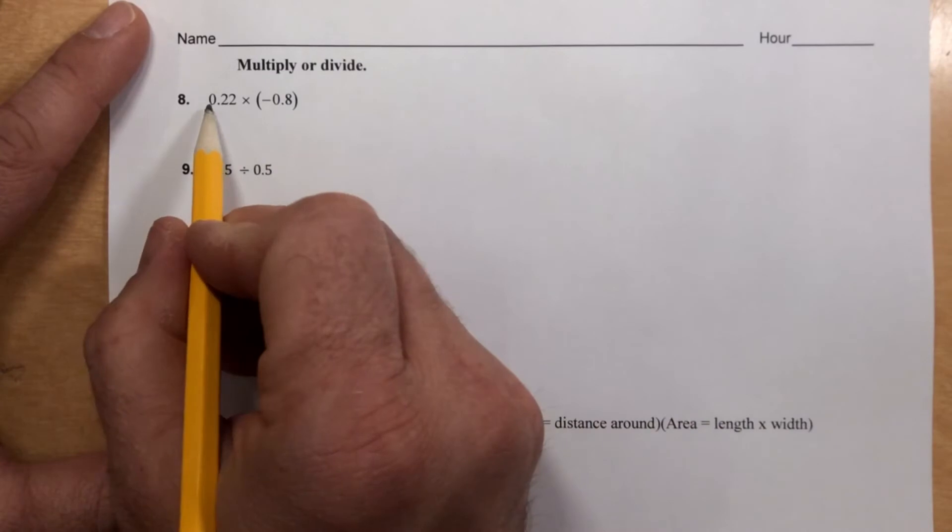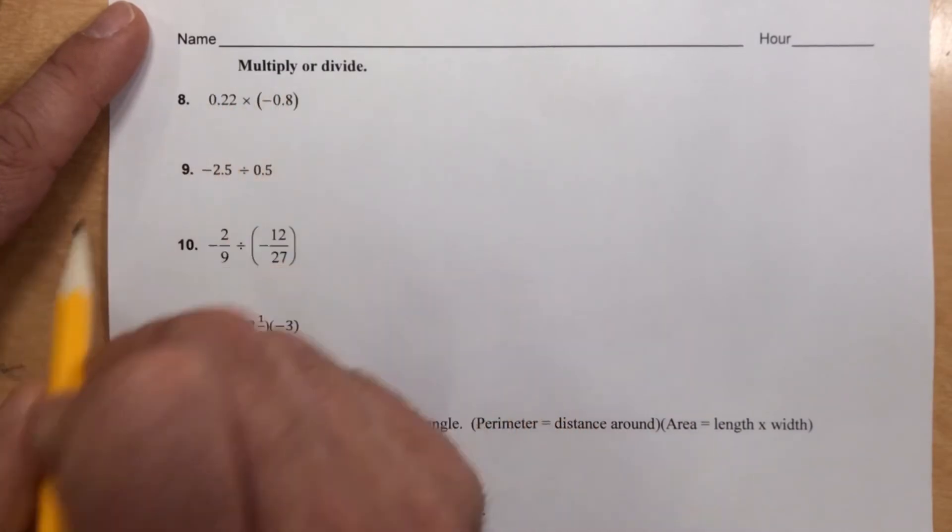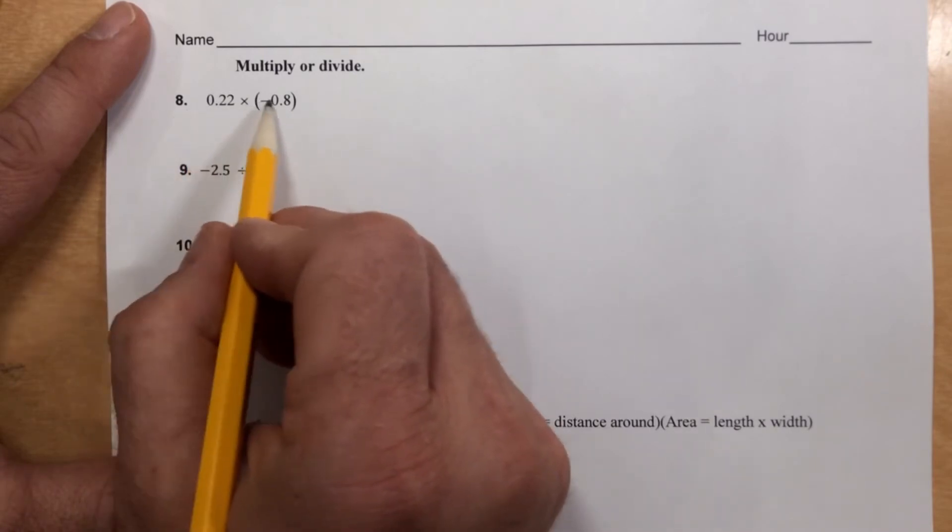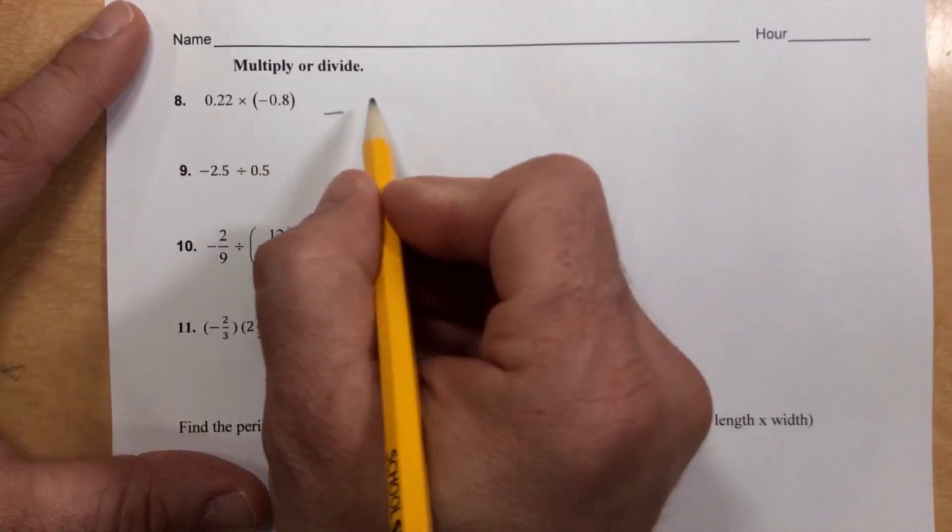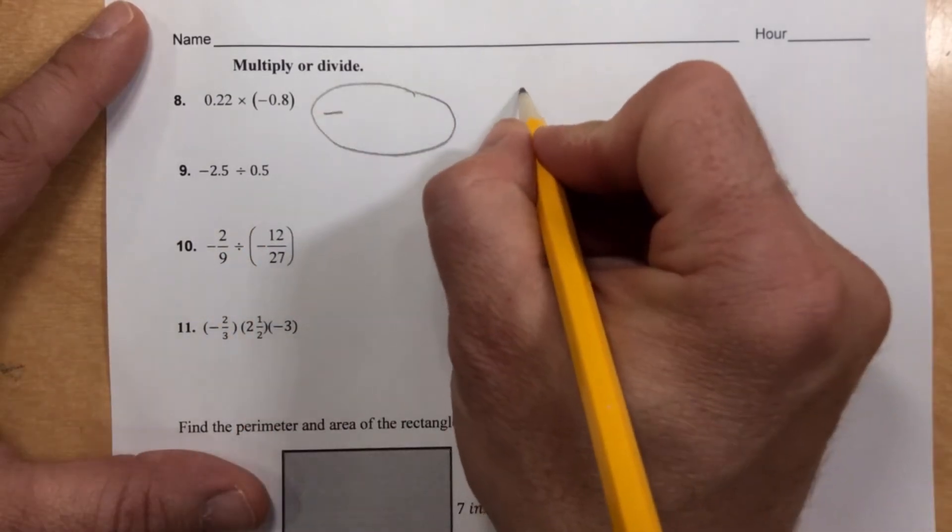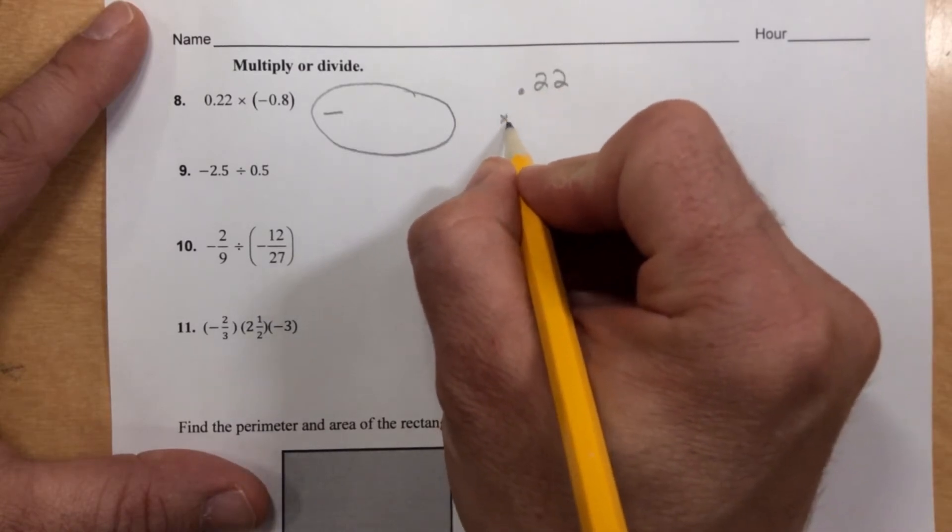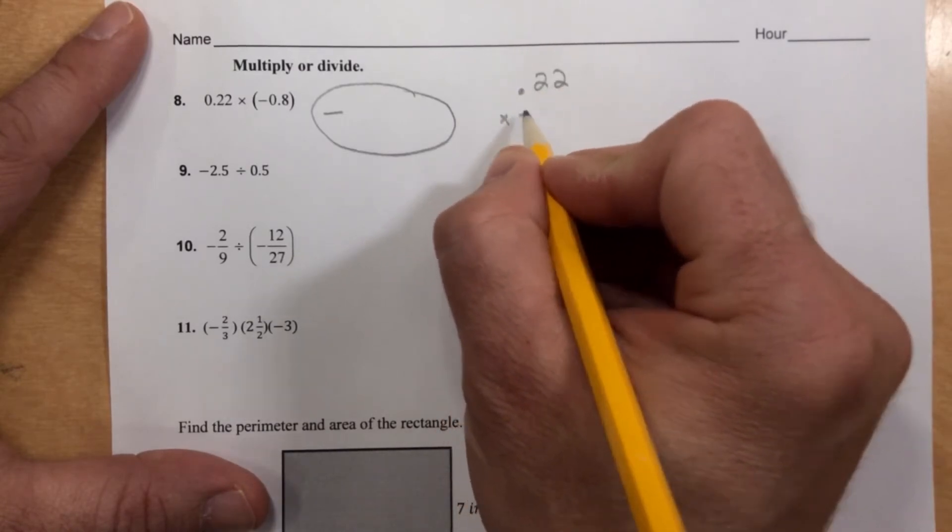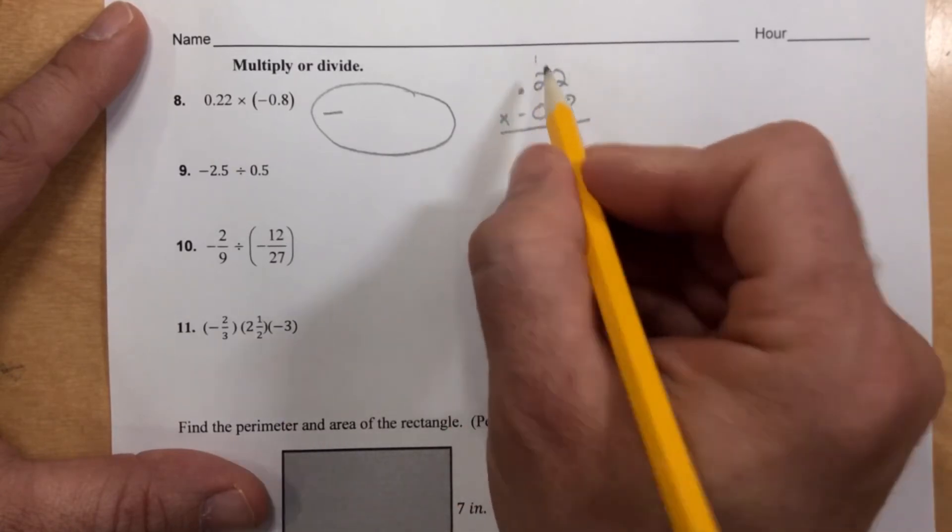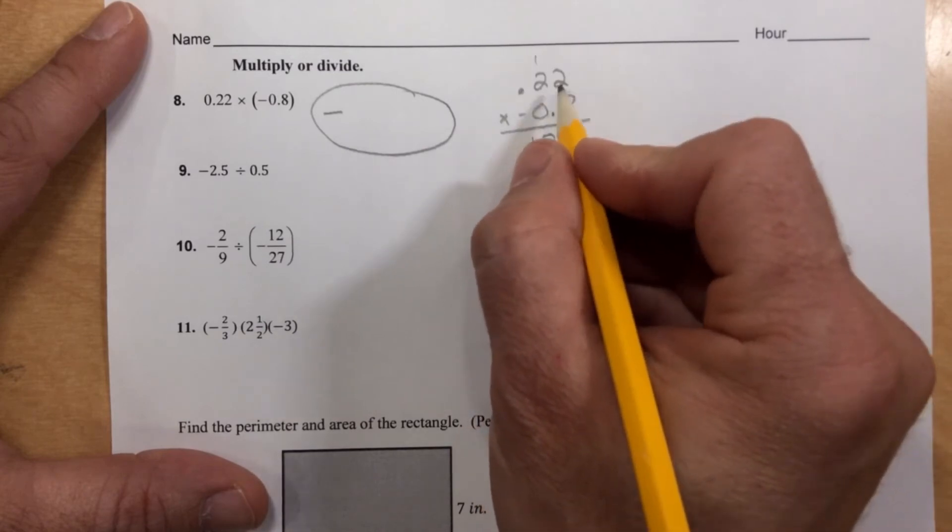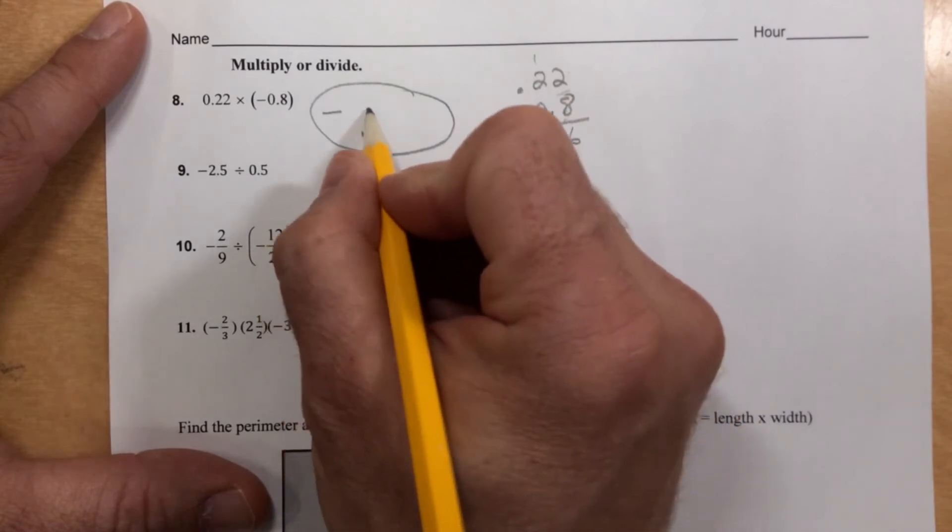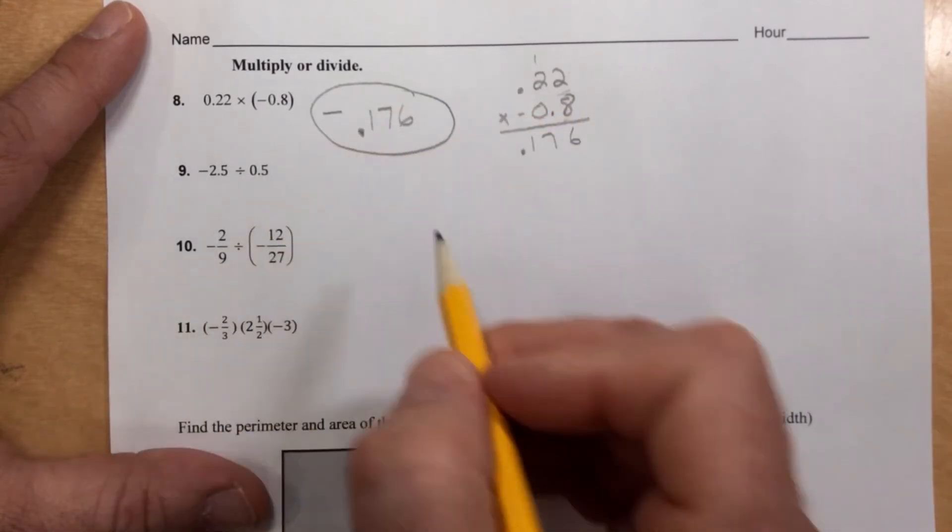Well, here we're just multiplying. Remember, when we multiply or divide, same sign positive, different sign negative. Number 8. These are different signs, so I know my answer is going to be negative. I'm going to put a negative right there where my answer is going to go so I don't forget. I have 0.22, or 22 hundredths, times negative 0.8. 8 times 2 is 16. 8 times 2 is still 16. Plus 1 is 17. Three numbers behind the decimal. Three numbers behind the decimal. 0.176. Up here where the negative was. Don't forget.